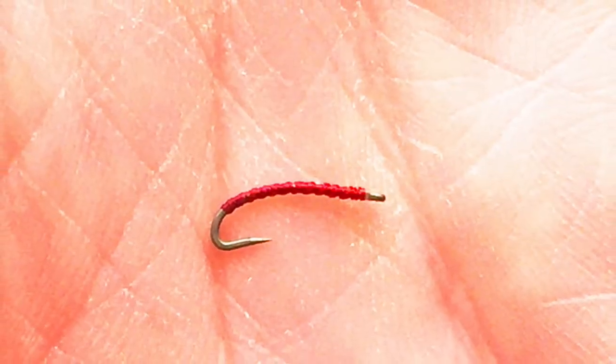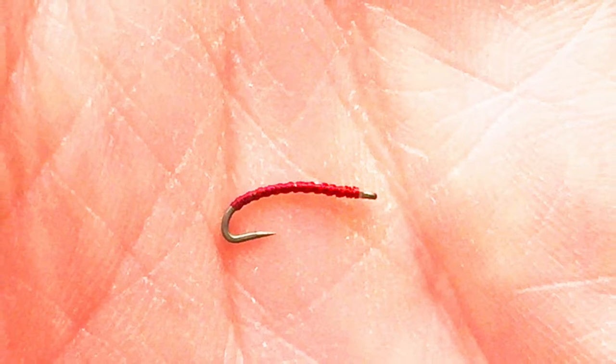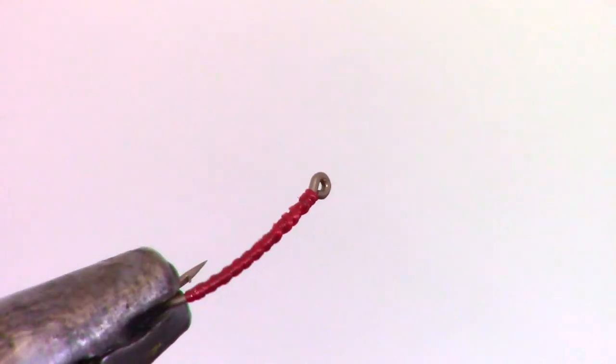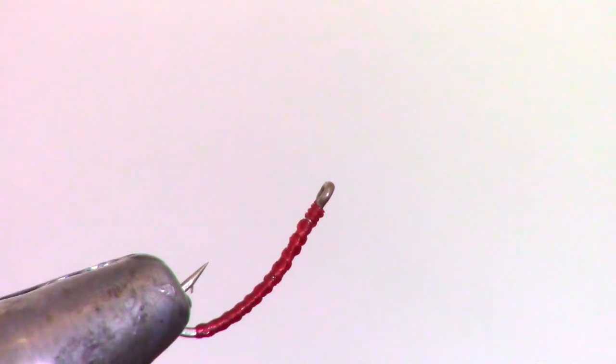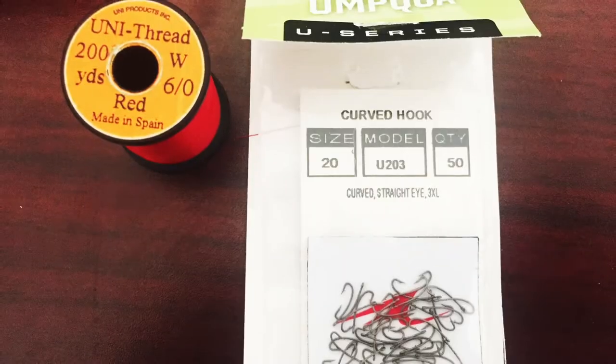Midge larvae are probably some of the most important and common food sources for trout. They are in every river and creek, and some parts of the year can be the only food source for the fish. This fly is so easy and quick to tie, you can make up a few dozen of them in an hour.